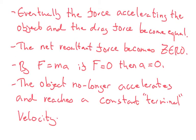Eventually, the force accelerating the object and the drag force become equal. The net resultant force becomes zero. By F equals ma, if F equals zero, then the acceleration a is also going to equal zero. The object no longer accelerates and reaches a constant terminal velocity.